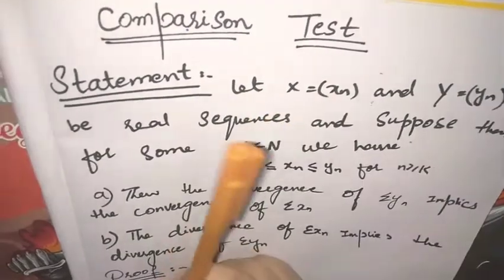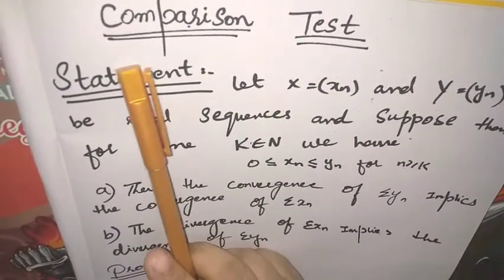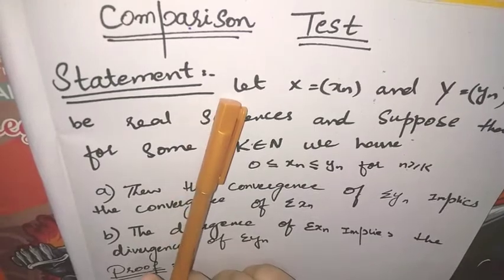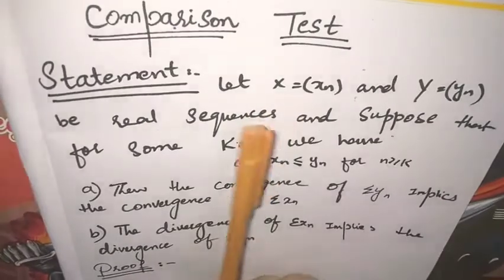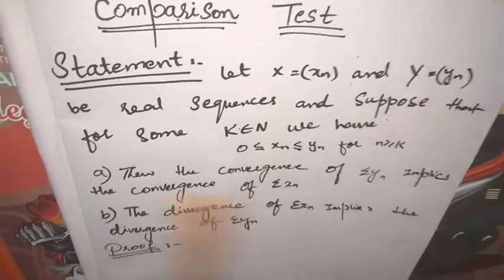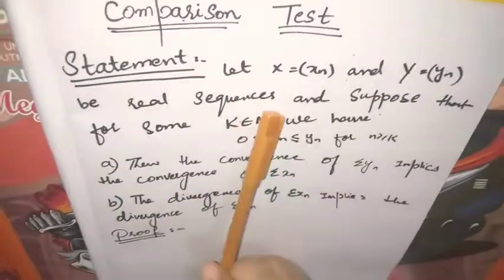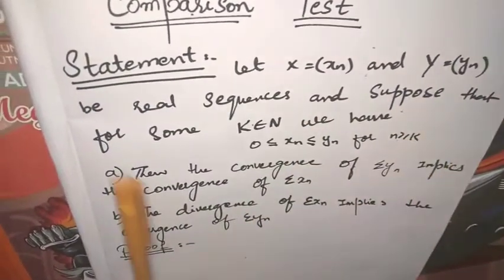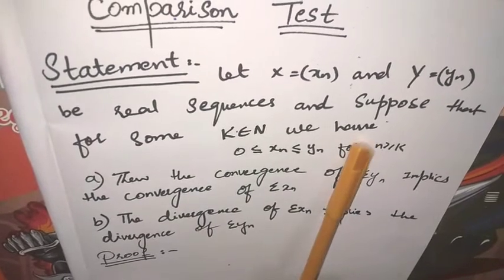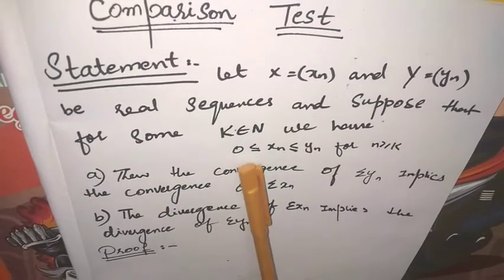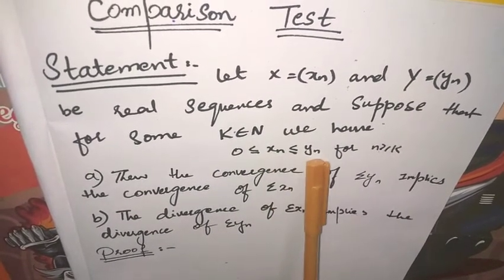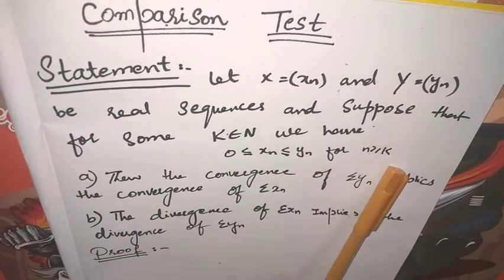Assalamualaikum. Today our topic is the Comparison Test. The statement is: let x = (xn) and y = (yn) be real sequences, and suppose that for some k belonging to ℕ, we have 0 ≤ xn ≤ yn for all n ≥ k.